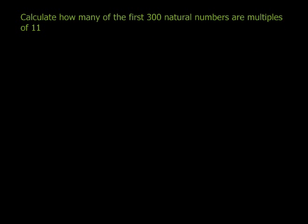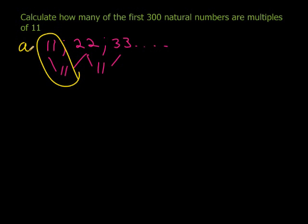Let's look at the next question. Calculate how many of the first 300 natural numbers are multiples of 11. Because they're talking about multiples of 11, let's start. What are the multiples of 11? Well, we first have 11 itself, then we have 22, then we have 33, and that goes on and on. Obviously, the constant difference is 11. 22 minus 11 is 11, 33 minus 22 is 11. The constant difference is 11. And therefore, if I look at these two, my first term is 11 and my constant difference is 11.